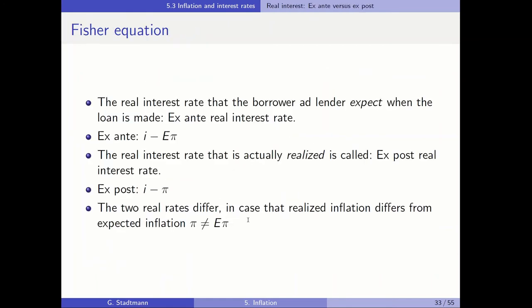When it comes to the Fisher equation, we need to be a bit more precise, because there are more or less two real interest rates: the ex-ante interest rate and the ex-post interest rate. The real interest rate that a borrower and lender expect when the loan is made is the ex-ante real interest rate: I minus the expected inflation rate. The real interest rate that is actually realized is the ex-post real interest rate: I minus the realized inflation rate.